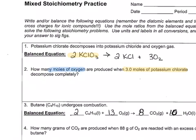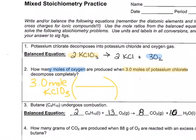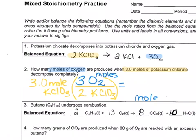I want to know how many moles of oxygen are produced. The nice thing is that it's giving it to me in moles, so I can start with my given of 3.0 moles of potassium chlorate and use my mole-to-mole ratio. According to my balanced equation: 2 KClO₃ produces 3 moles of O₂. This is actually just a one-step problem, and my answer is 4.5 moles of O₂.